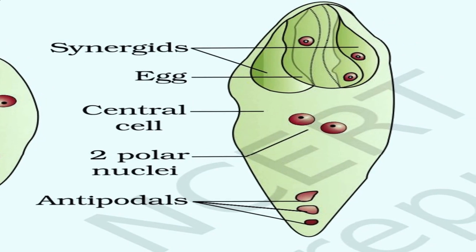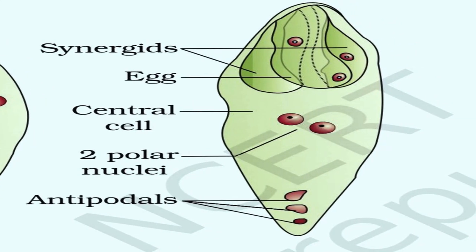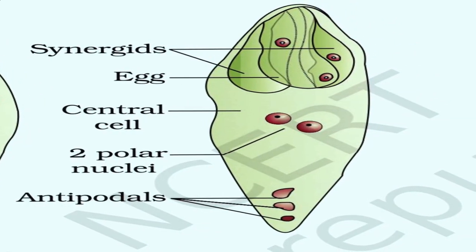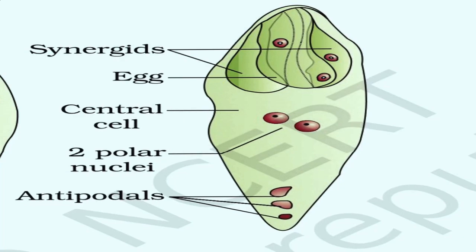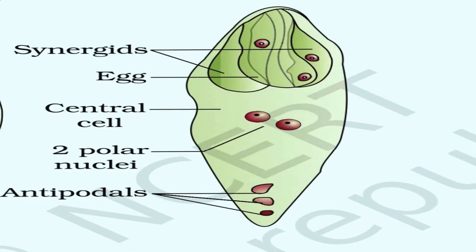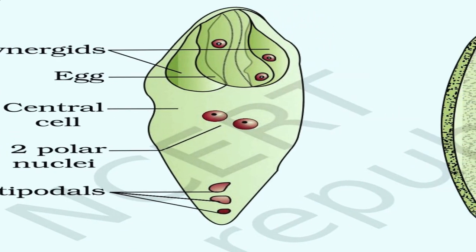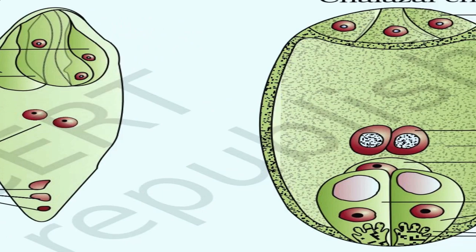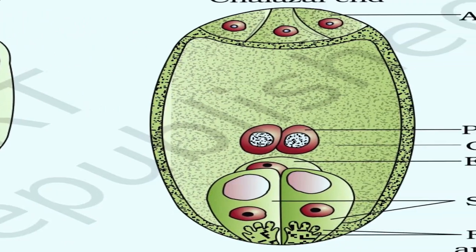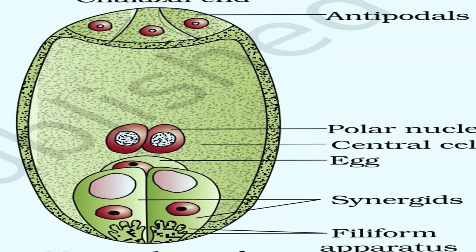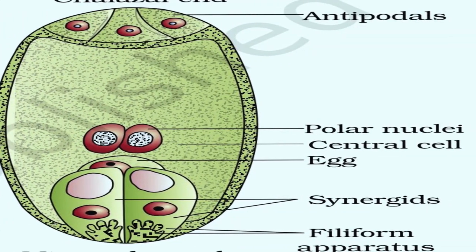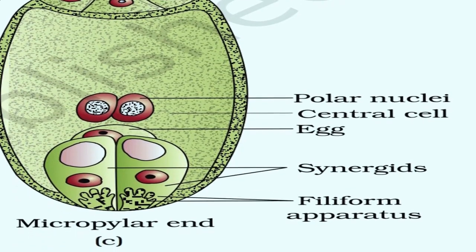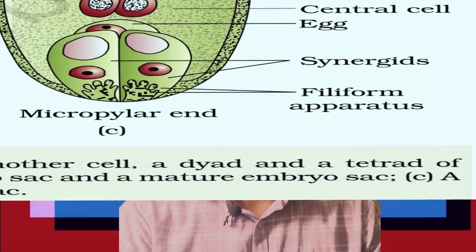Around six of the eight nuclei organize themselves into cells. As a result, the mature embryo sac is eight-nucleate and seven-celled in structure.